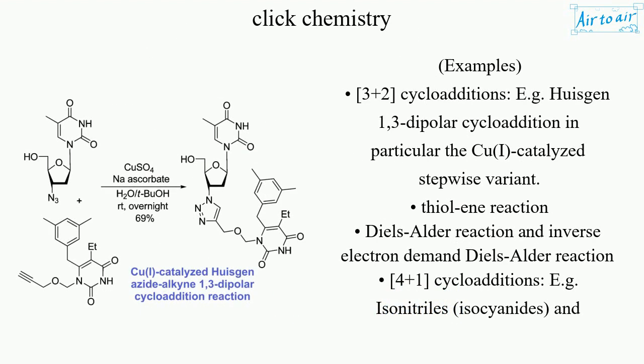Examples: 3+2 cycloadditions, e.g., Huisgen 1,3-dipolar cycloaddition (in particular the CuI-catalyzed stepwise variant), thiolene reaction, Diels-Alder reaction and inverse electron-demand Diels-Alder reaction, 4+1 cycloadditions.